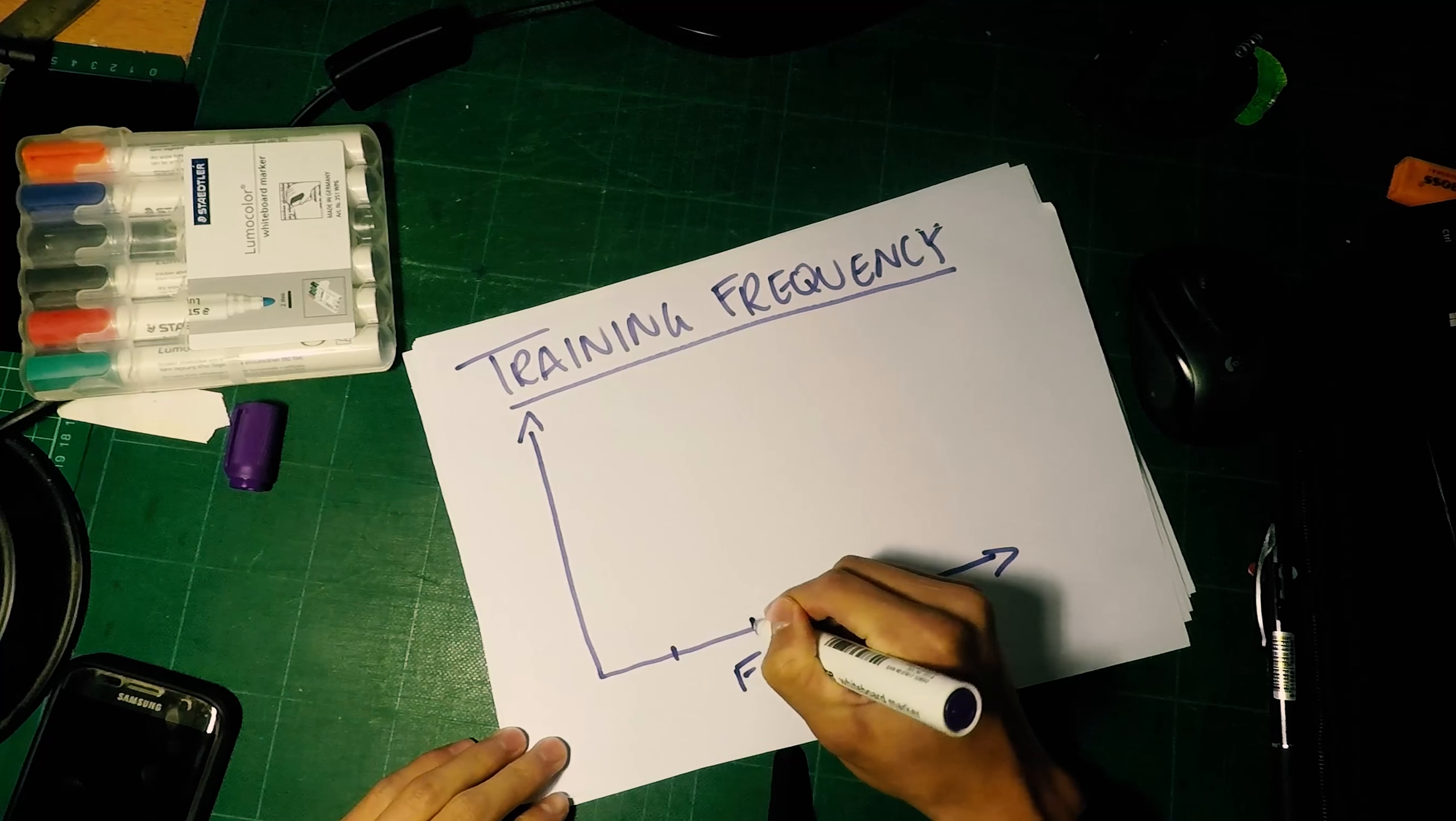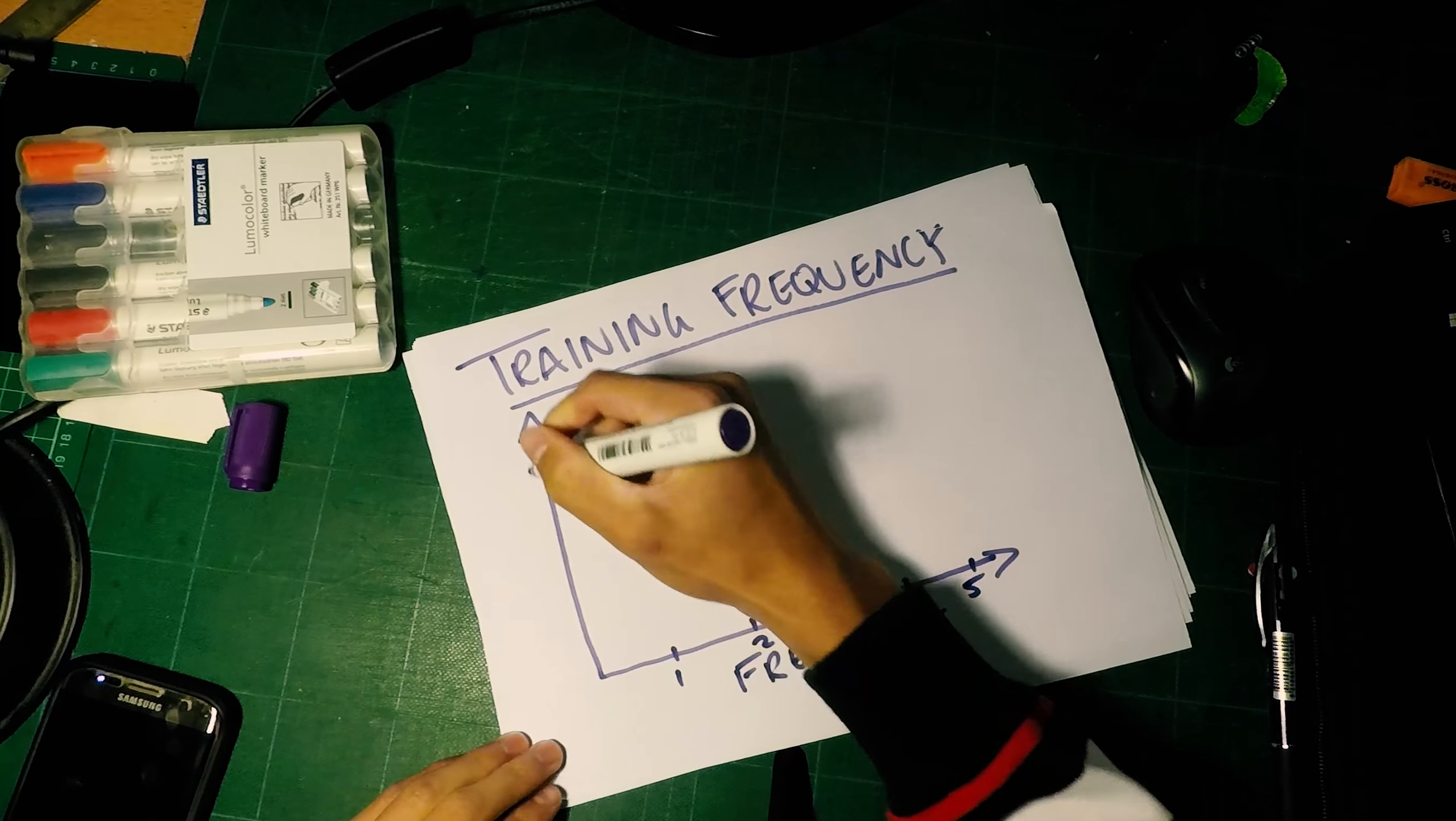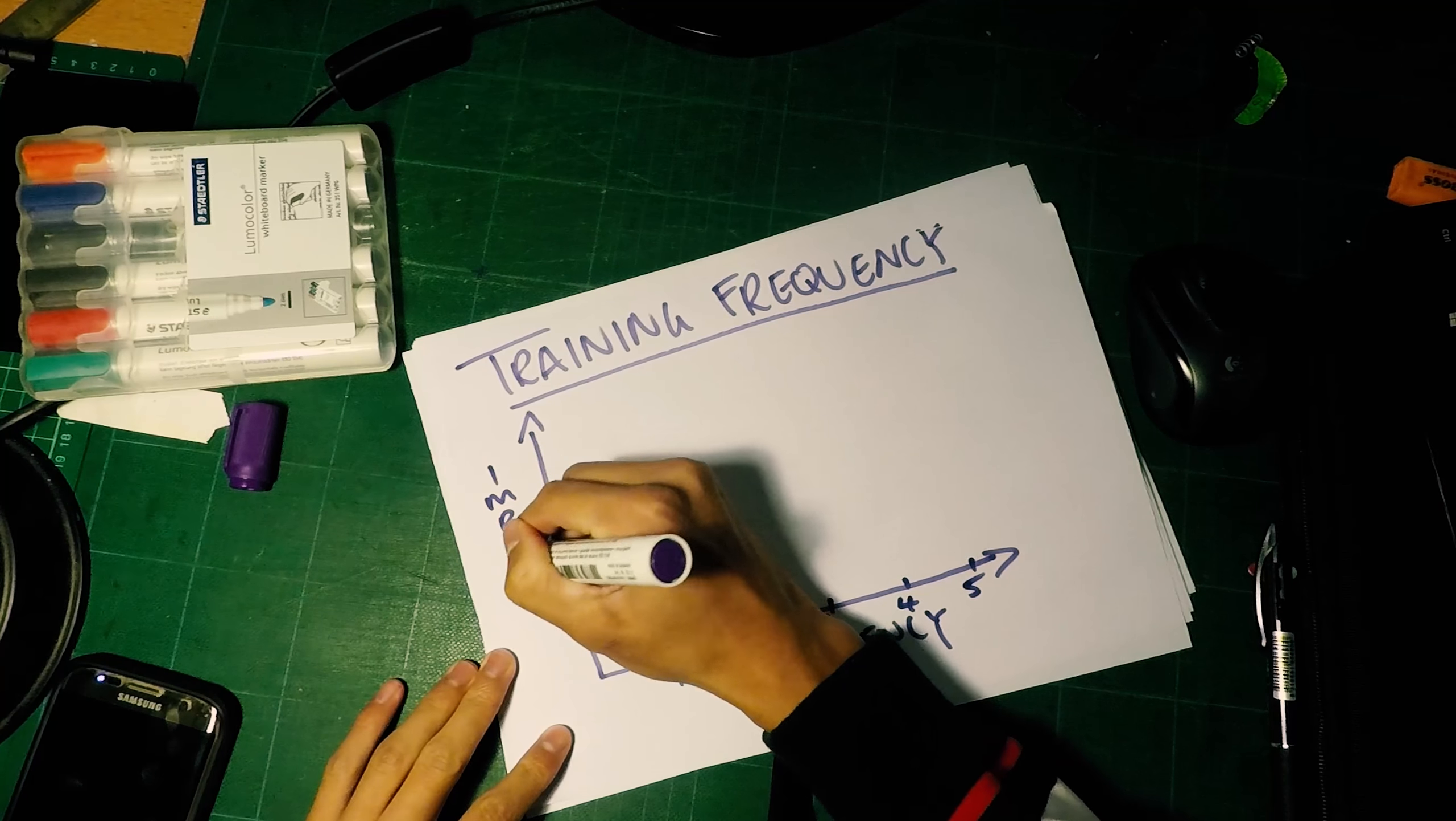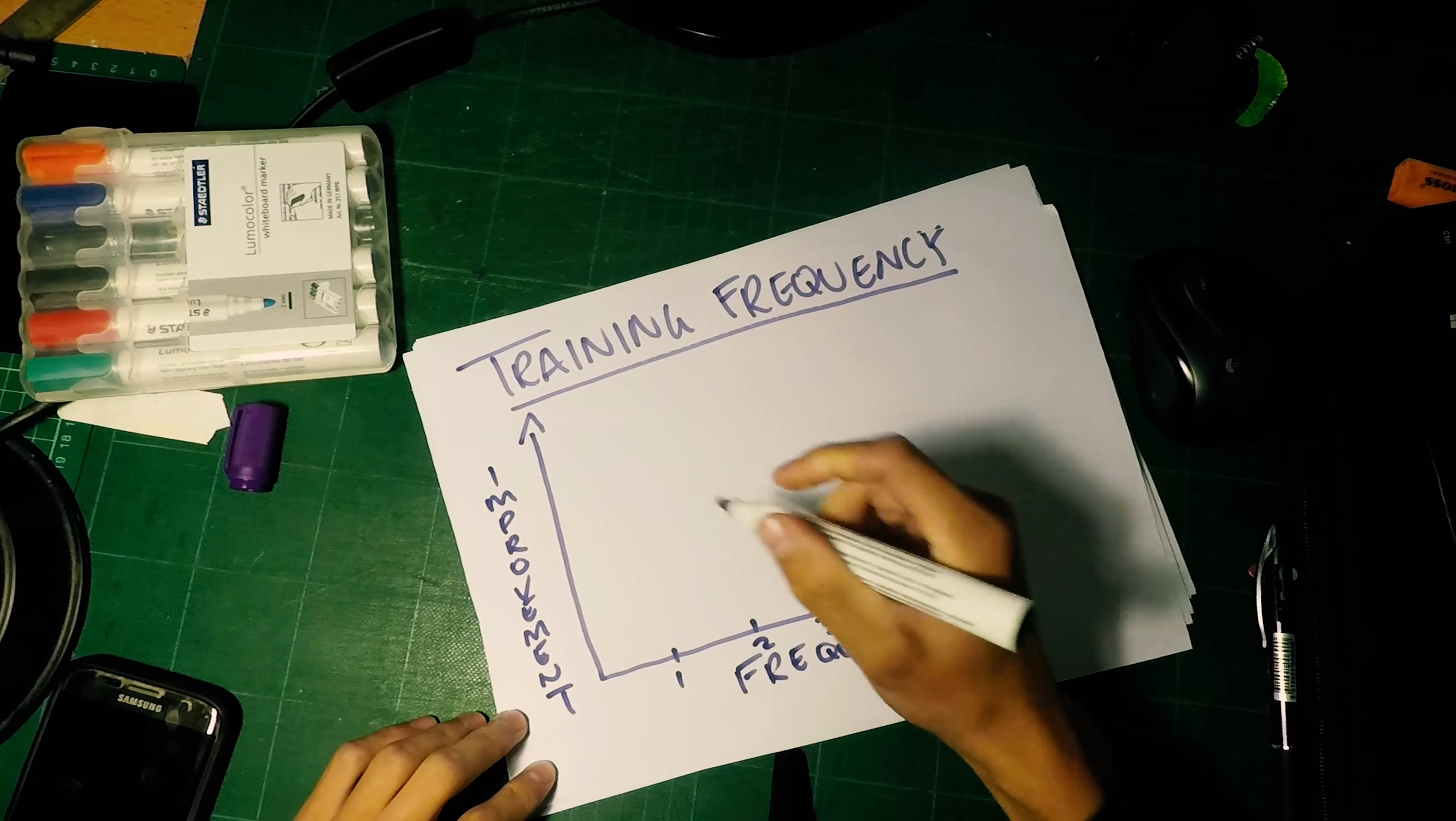So we've got a graph here. On the x-axis we have the frequency you're training every week—either one, two, three, or four or five. And then on the y-axis we have our improvement level. That can be based on strength, mass—just say improvements you get from strength training.